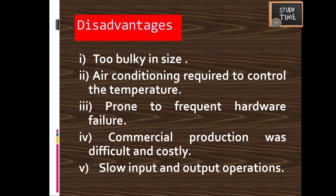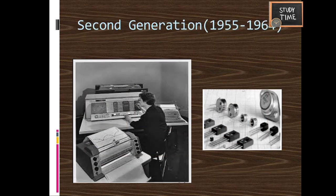Second generation computers used semiconductor transistors instead of vacuum tubes. These transistors were cheaper, consumed less power, were more compact in size, more reliable, and faster than first generation computers. Overall, second generation computers were significantly more reliable compared to the first generation.